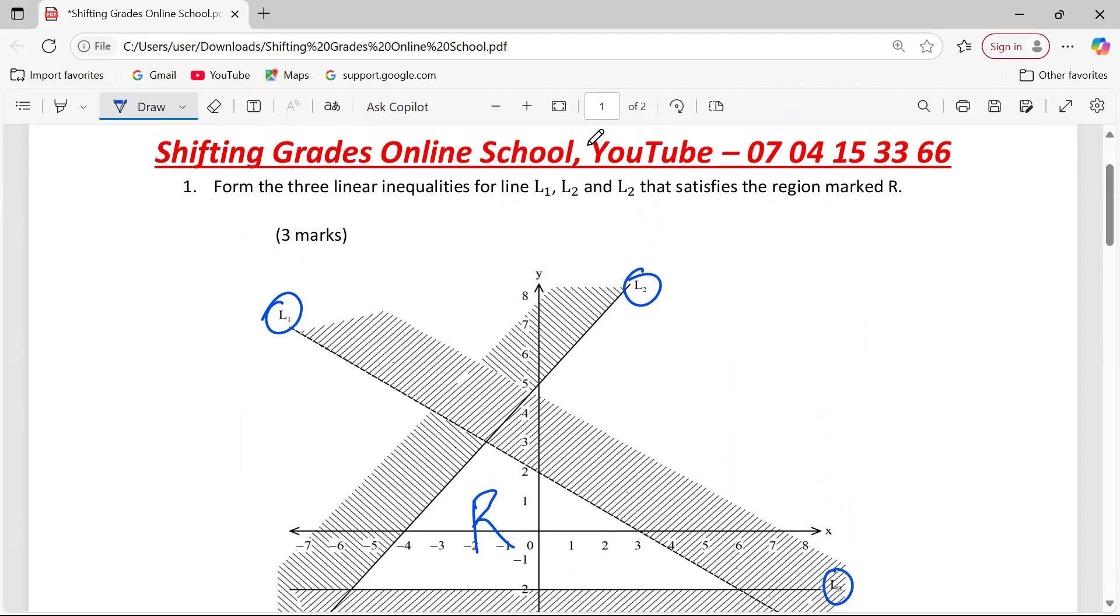So let us look at how we can form the inequalities which have been represented. In most cases, you shall be given inequalities for you to represent them graphically. But in this case, the representation has already been done. Now we are tasked to simply come up with linear inequalities. One thing that I want you to know is that what we are having here, L1, L2, and L3, are what we call borderlines. These are borderlines that represent certain inequalities. The first thing that we shall do is to come up with the equations that represent these borderlines.